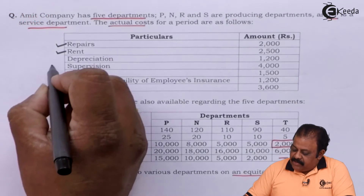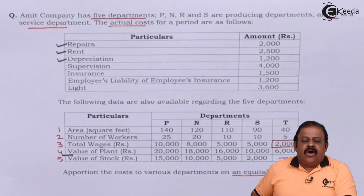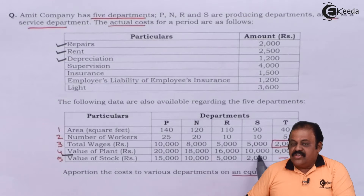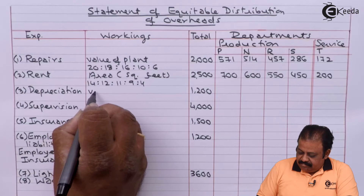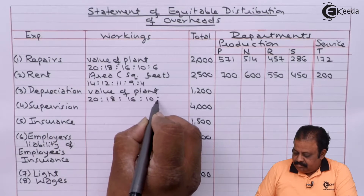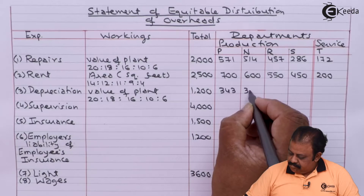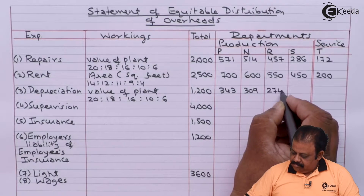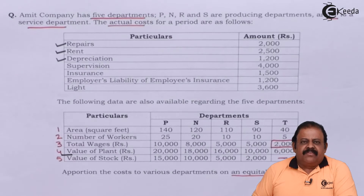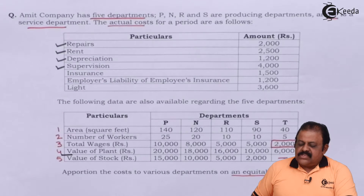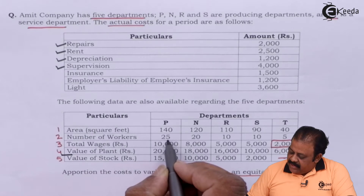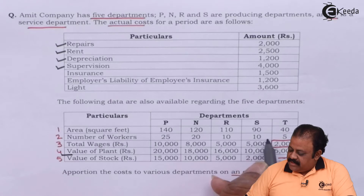Next expense — depreciation: it will be taken on value of plant, that is in the ratio of 20,000 : 18,000 : 16,000 : 10,000 : 6,000. Next expense — supervision: this will be divided in the ratio of number of workers, that is 25 : 20 : 10 : 10 : 5.